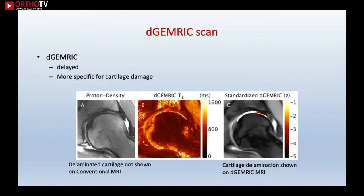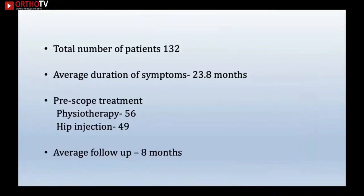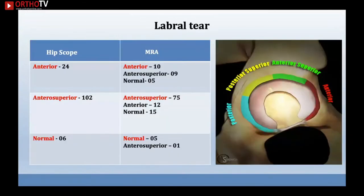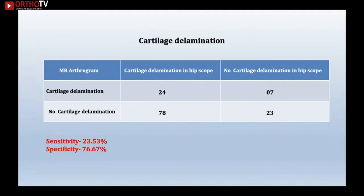Chondrolabral delamination is an important prognostic factor affecting outcomes, so it is vital to diagnose it. We conducted a study at St Helens Hospital involving 132 hip arthroscopy patients. MR arthrogram is relatively accurate for diagnosing labral tears and their position, but not sensitive for cartilage delamination — MR arthrogram suggested no delamination, yet intraoperatively 78 patients had it. Specificity was around 76%; for labral tears, both sensitivity and specificity were around 84%.